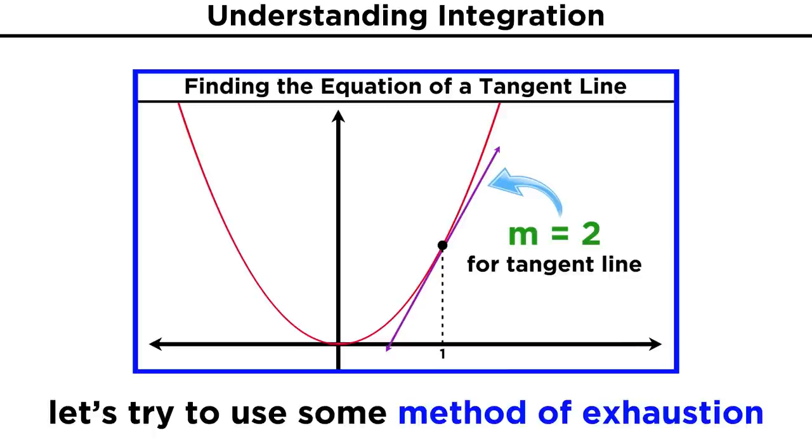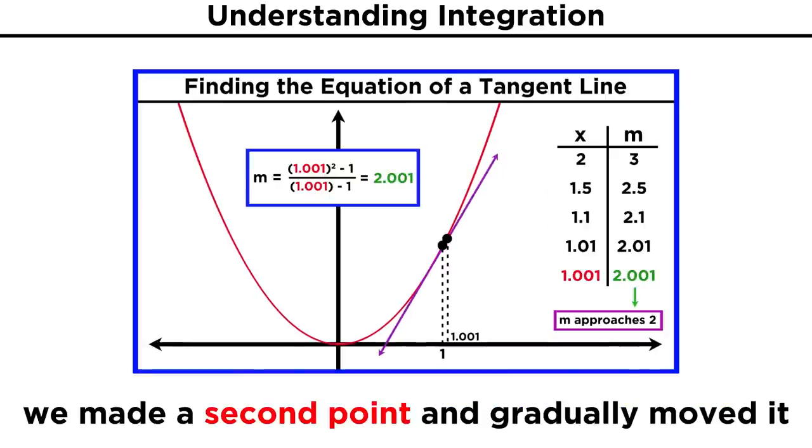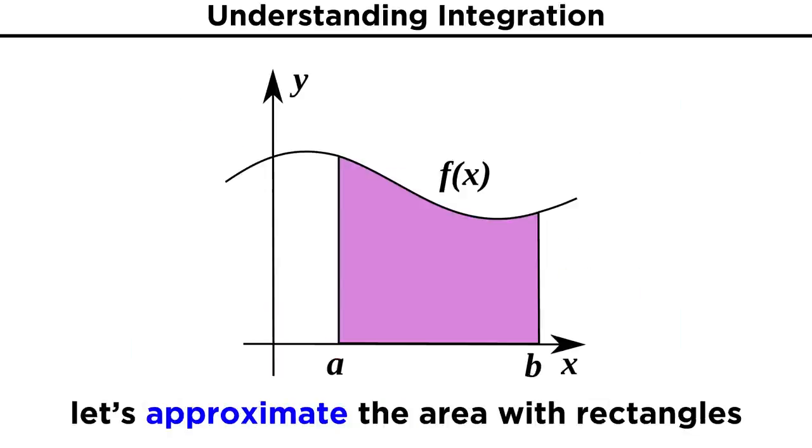But when we first learned about differentiation, we saw that we could get the slope of a tangent line through a method of exhaustion. Can there be some parallel method here? In fact there is. When we couldn't get the slope of a line with one point, we made a second point so that we could get the slope, and then pushed the second point towards the first point. Here we can't get the area of this shape, so let's approximate it with a shape we can get the area of, a rectangle.